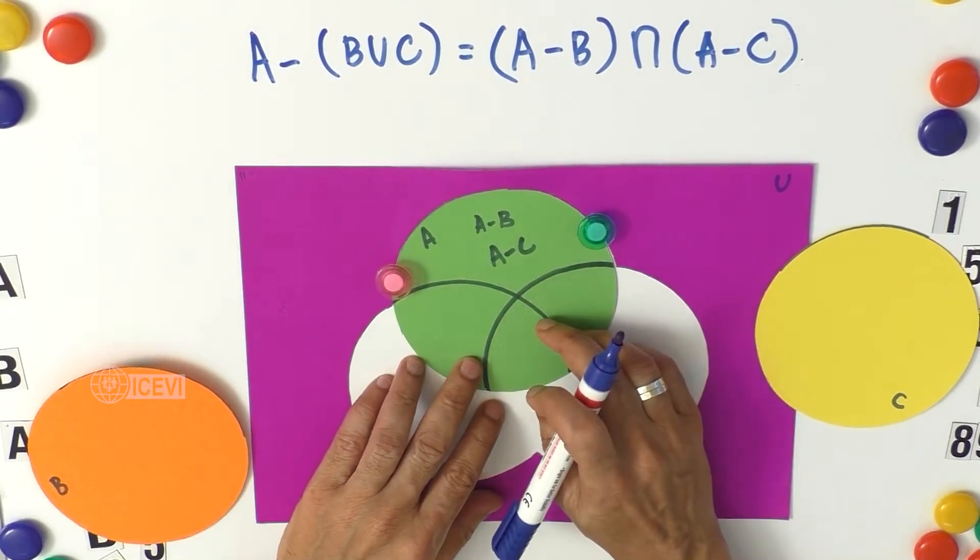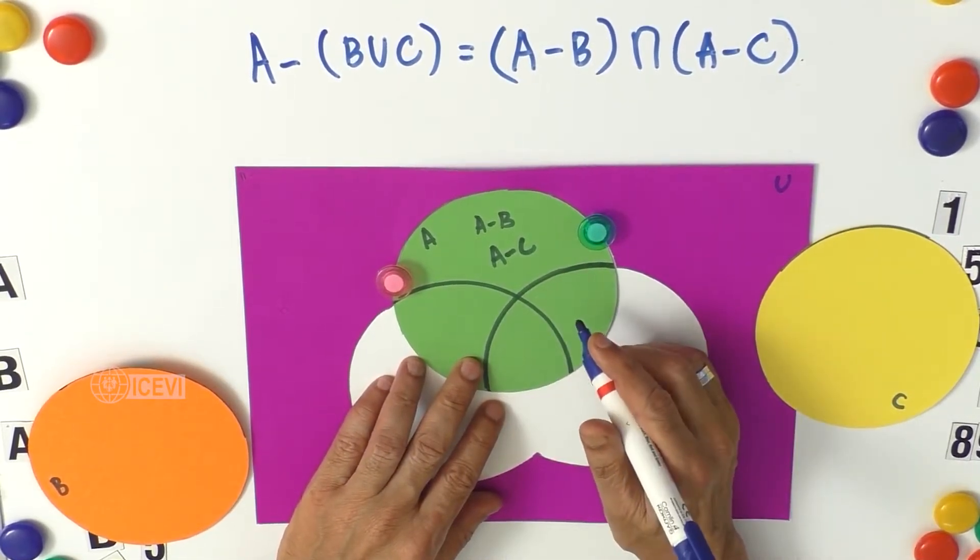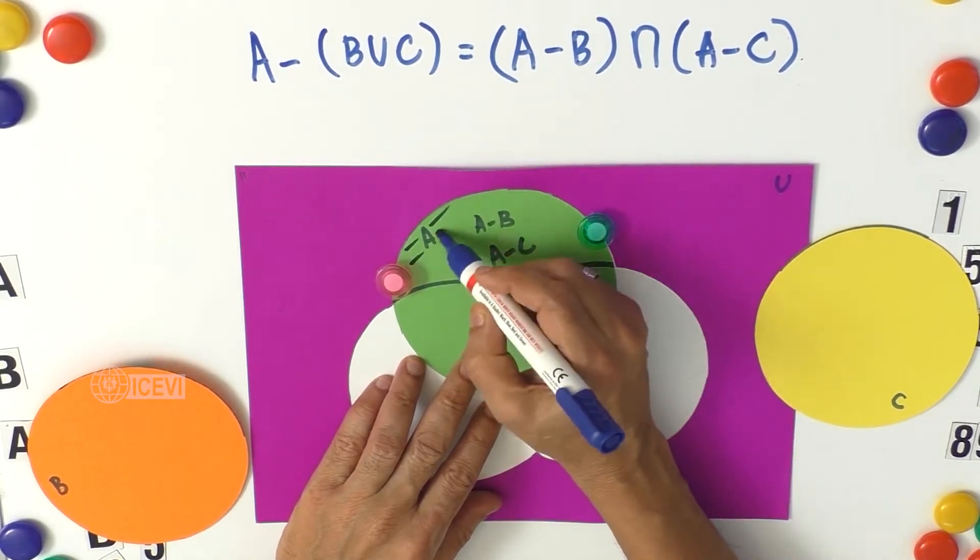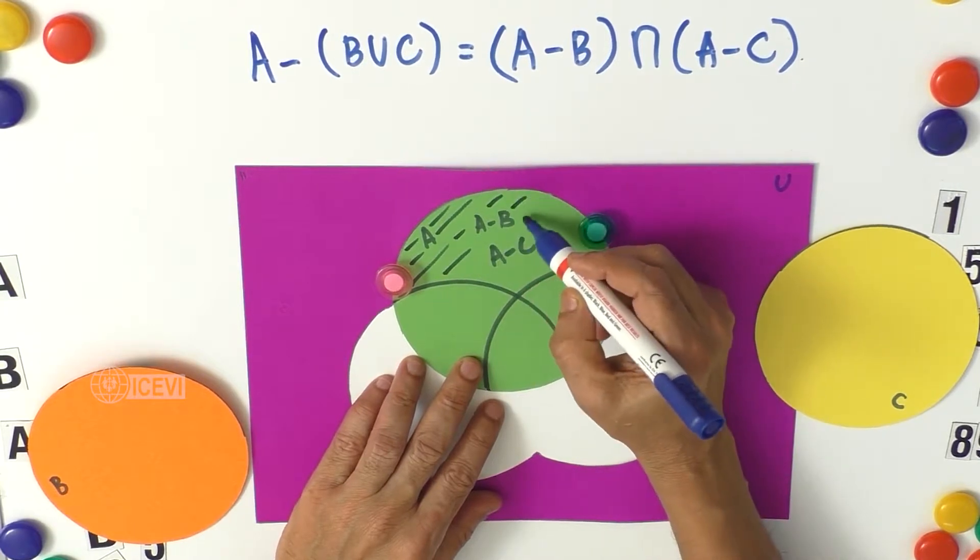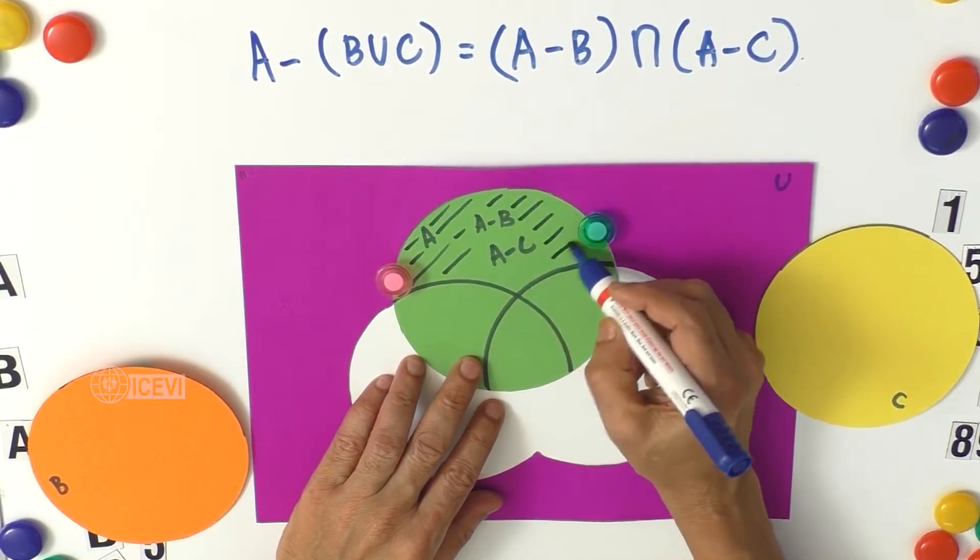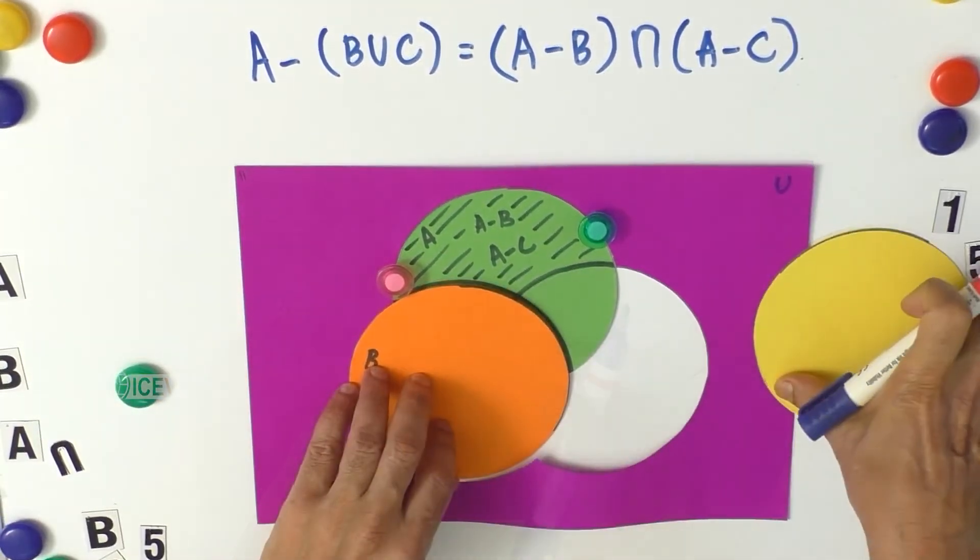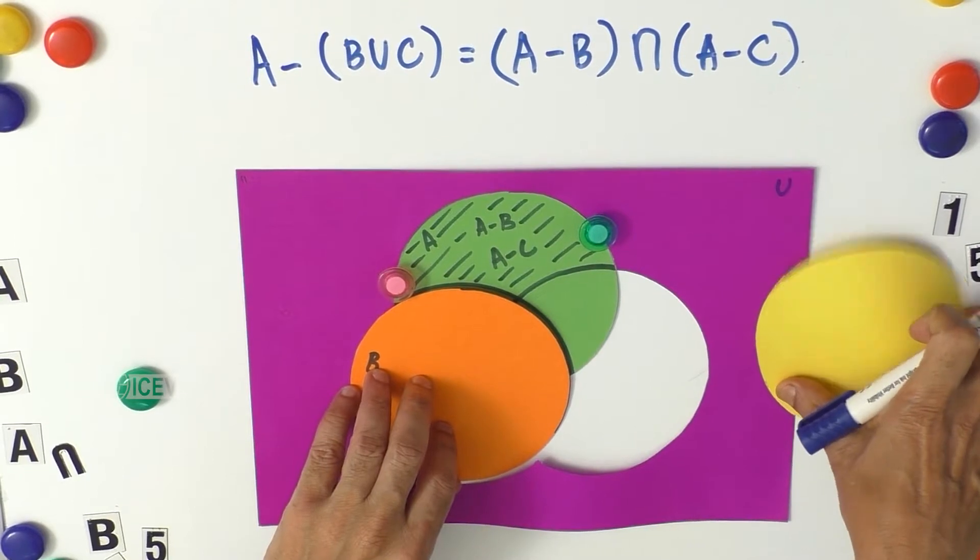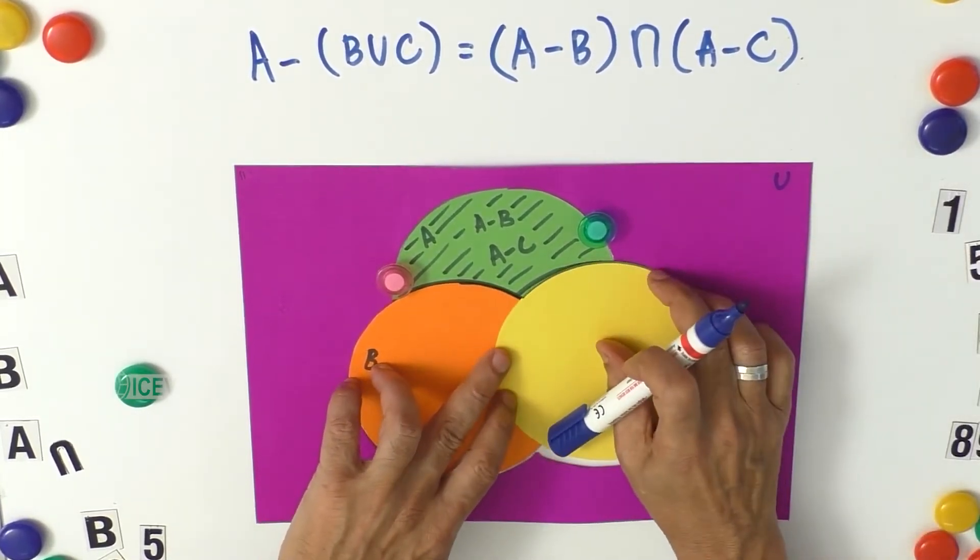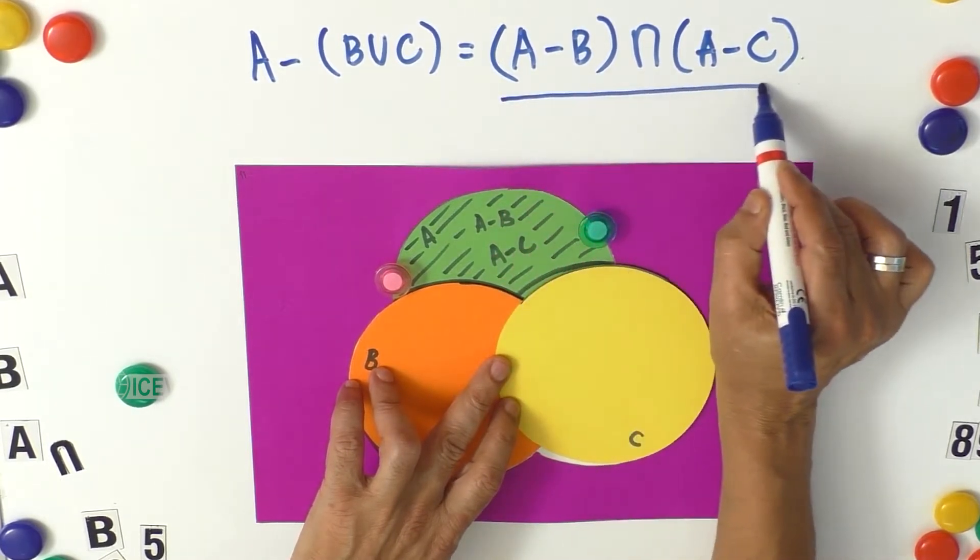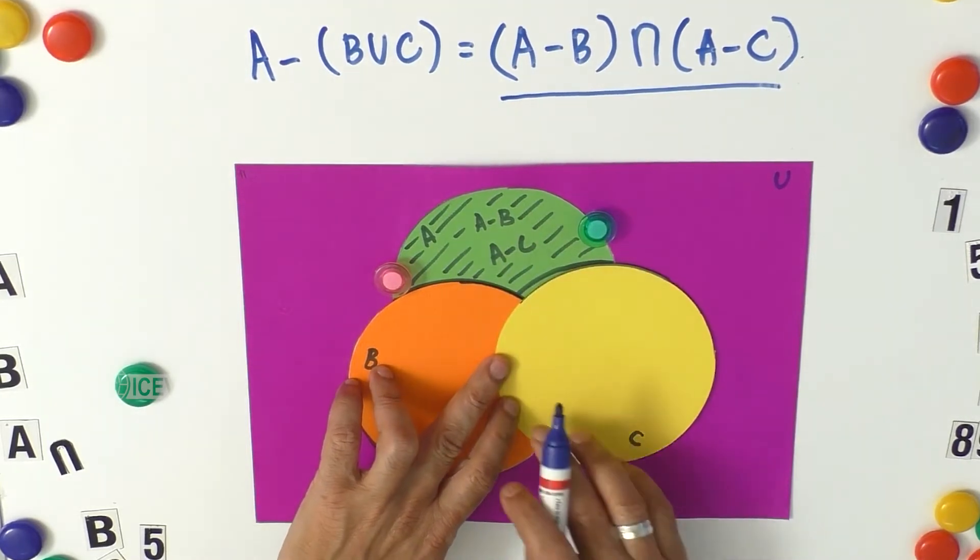What is common between A minus B and A minus C? The common portion of A minus B and A minus C, the common interaction is the portion above the set B and above the set C. So we have found out A minus B intersection A minus C.